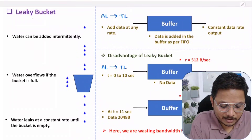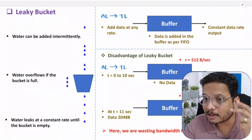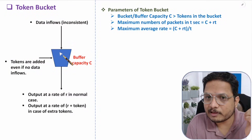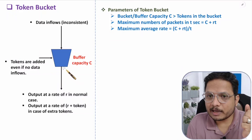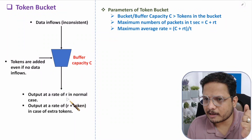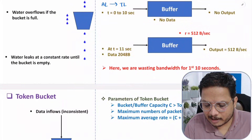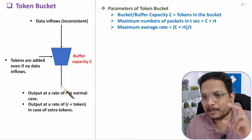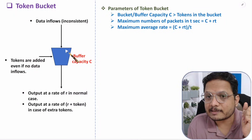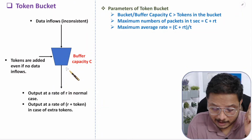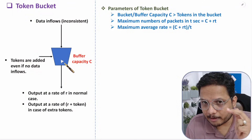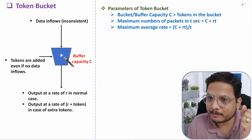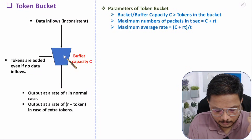In the token bucket algorithm, data inflow is still inconsistent and the data outflow has a constant rate r — in the previous example, r = 512 bytes per second. However, when there is no data inside the buffer, tokens are added to the buffer with respect to time. What is the meaning of those tokens? It means that when data arrives, any data that has corresponding tokens will be transmitted immediately.